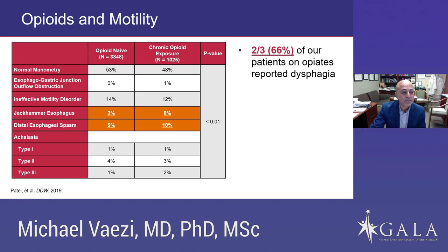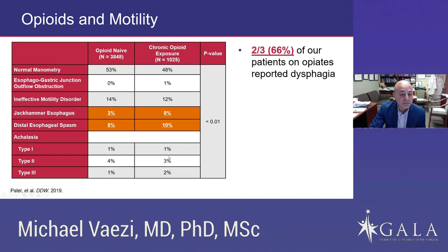This study by Dr. Patel at Vanderbilt had a sample size of more than 5,000 patients, similarly divided into opioid naive versus chronic opioid exposure. He found that patients on chronic opioids are more likely to have jackhammer esophagus or distal esophageal spasm. However, he did not confirm that type 3 or type 2 were more common in patients on chronic opioids. The main point is that they do present with dysphagia, and hypercontractile state is very common in this group.